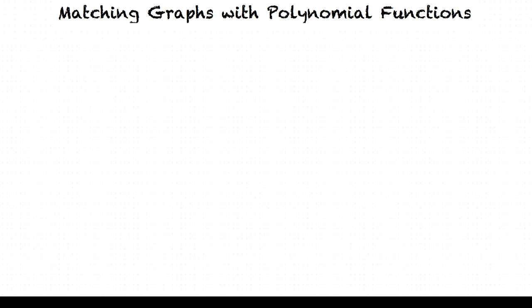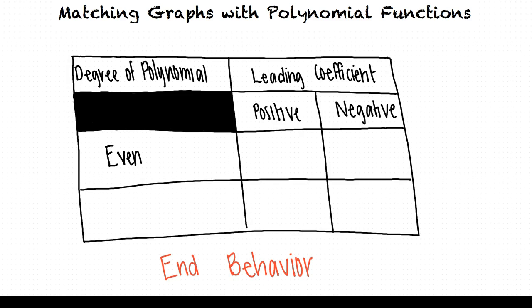The end behavior of a function depends on the degree of the polynomial and the leading coefficient. If the degree of the polynomial is even, both ends of the graph will point in the same direction. They will point upwards if the leading coefficient is positive, and they will point downwards if the leading coefficient is negative.